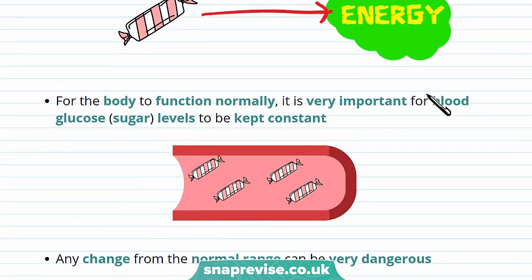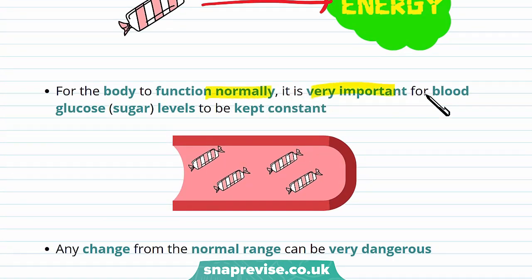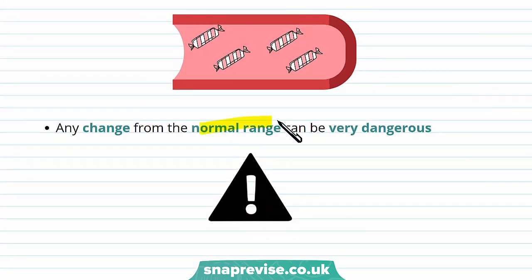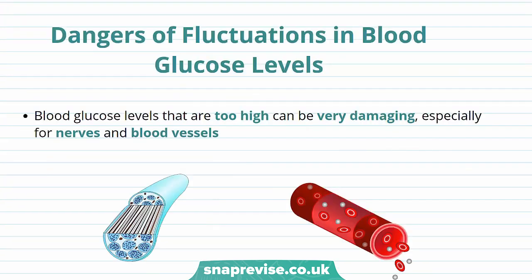For the body to function normally, it's really important for blood glucose or sugar levels to be kept constant. This happens through homeostasis. People who can't keep their blood glucose level constant may have diabetes — we talk about this more in another video. Any change from the normal range of blood glucose level can be very dangerous. Now I'm going to talk about what happens if blood glucose levels are outside its normal range.